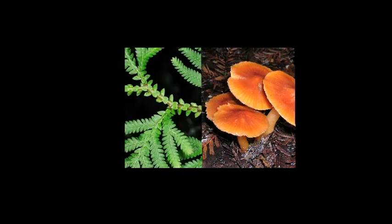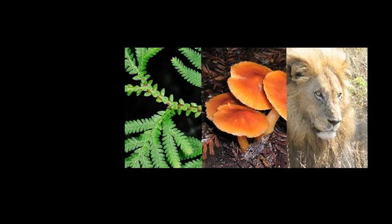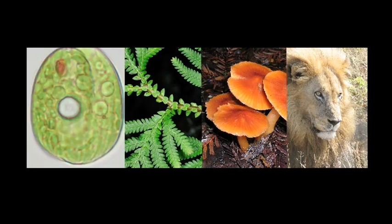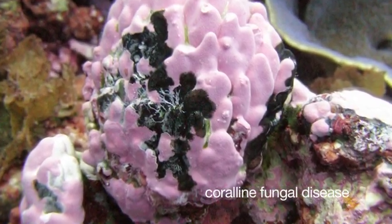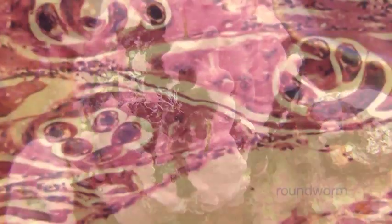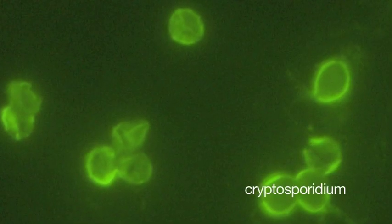Eukaryotes are complex cellular life forms with internal structures. Of those eukaryotes that cause disease, we have fungi, and then we have some worms and some protozoa — those are the major classes of disease-causing organisms.